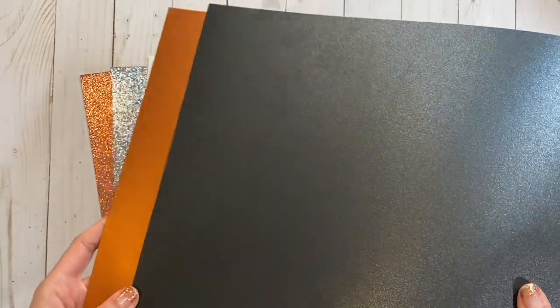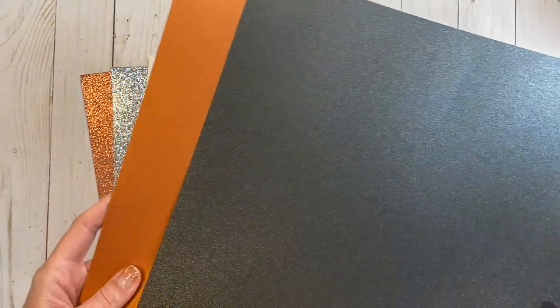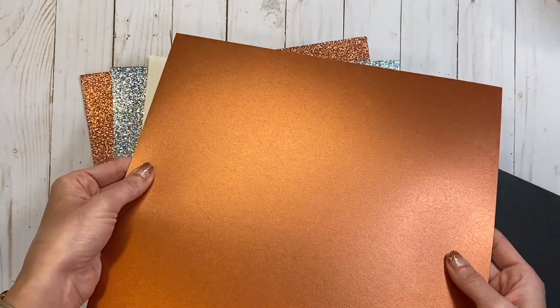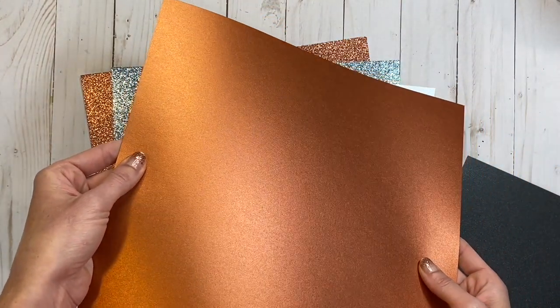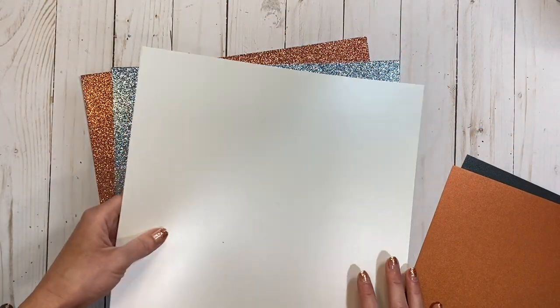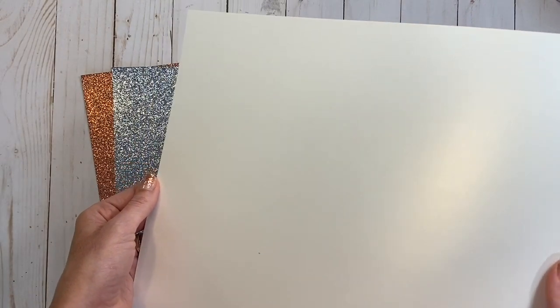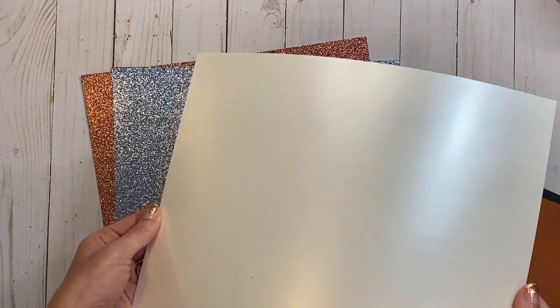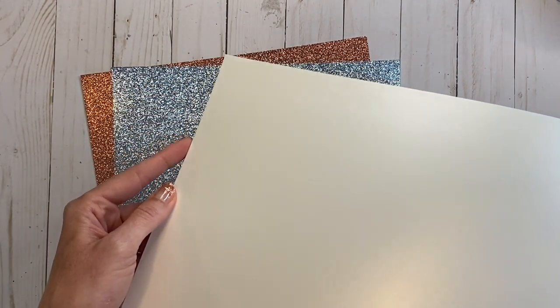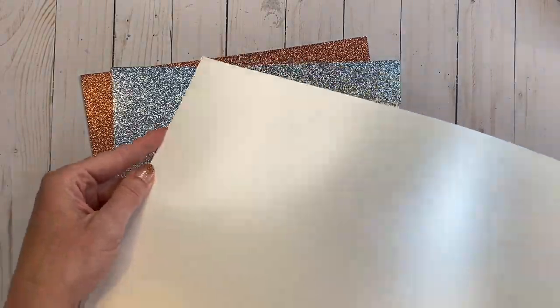You see all that beautiful shimmer, and so this is the black ore. Here is the copper ore, which will be wonderful for fall, all of our fall projects, and then the white pearl. It's more of a pearly finish than having shimmer like the other two, but it's still shiny and so beautiful, still heavy weight.